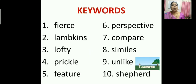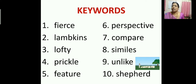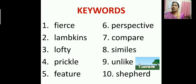Now let us see the key words. The first word is Fierce — F-I-E-R-C-E — which means dangerous. The second one is Lambkins, which refers to a young lamb. Next, Lofty means high, of great height — something which is of great height.